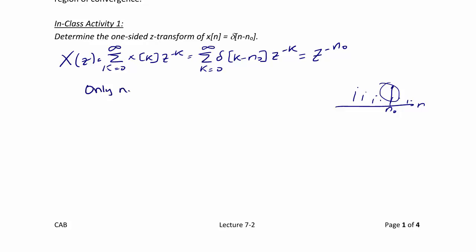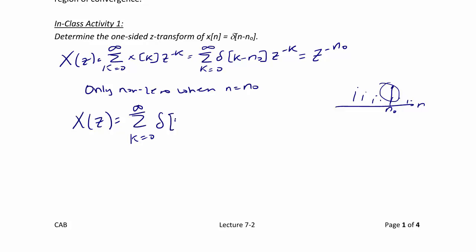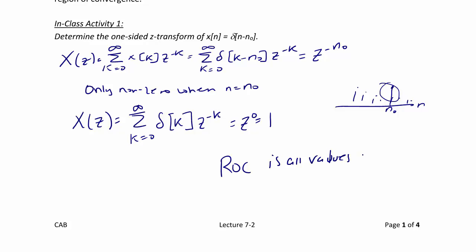This is because it is only non-zero when n is equal to n0. Now, what if we wanted to find the Z-transform of a unit impulse that was not shifted? That would be the summation from k equals 0 to infinity of delta of k times z to the negative k. This would only be non-zero when z to the negative k is evaluated at k equals 0, so this is z to the 0, or 1. For both of these examples, the region of convergence is all values of z, or the entire z-plane.